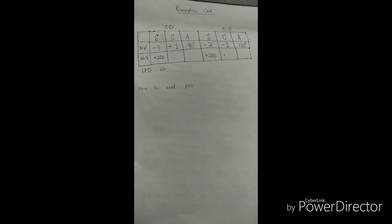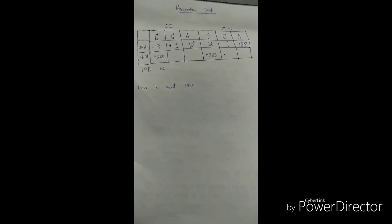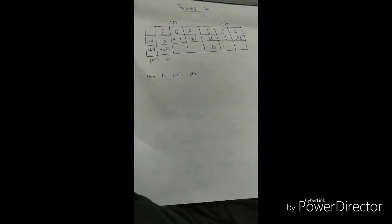Now here is the prescription card. You should know how to write the prescription card. It has OD, which means the right eye, oculus dexter. OS means oculus sinister, the left eye. It has S for spherical error, C for cylinder, and A for astigmatism. In this case, the sphere is minus 3, cylinder is plus 1, axis is 90. You should also know that axis 90 degrees means you need power at the 180 degree meridian.